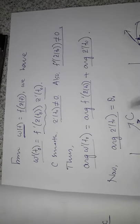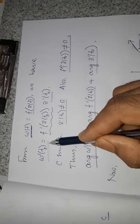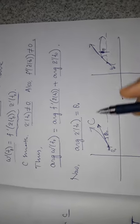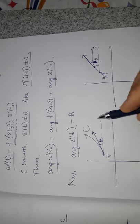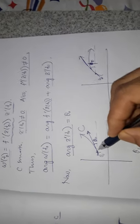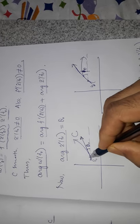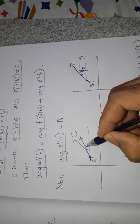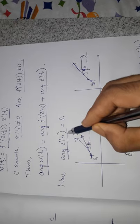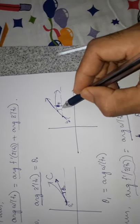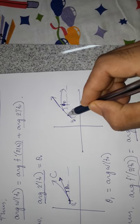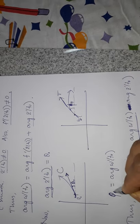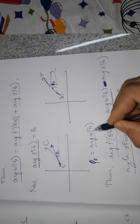Therefore we can talk about the argument of w'(t₀), which is the sum of the two arguments: argument of f'(z(t₀)) plus argument of z'(t₀). Now, the argument of z'(t₀) is the angle of inclination of the tangent to curve c at z₀, which we denote by θ₀. Similarly, the argument of w'(t₀) — the angle of inclination of the image curve at w₀ — we denote by φ₀.